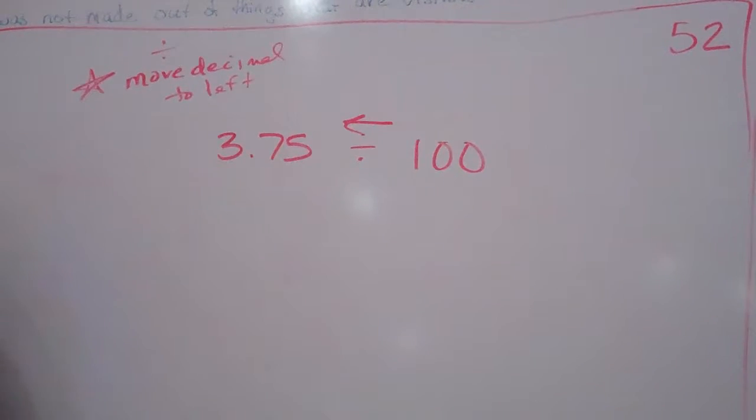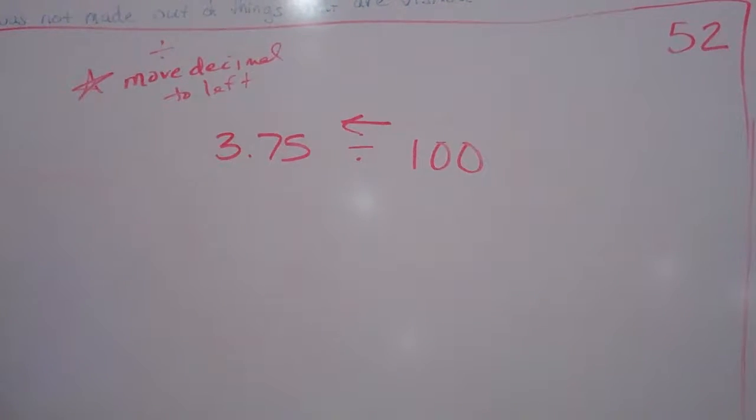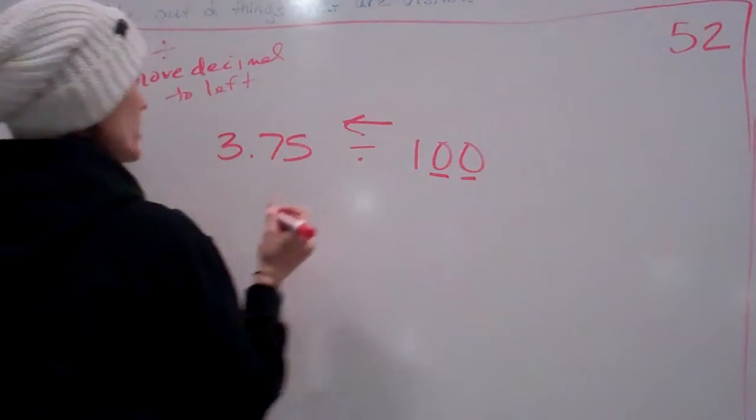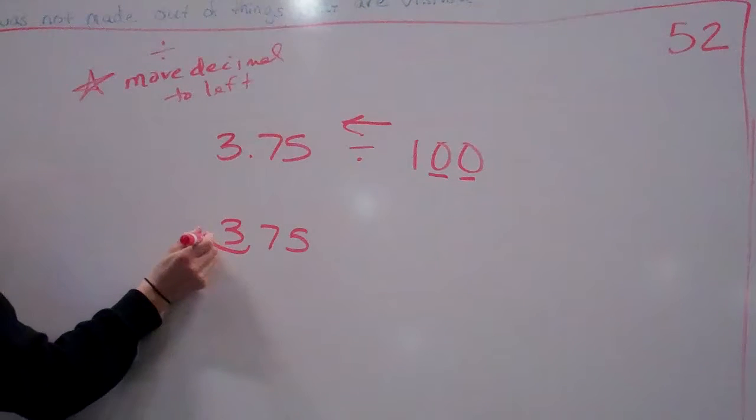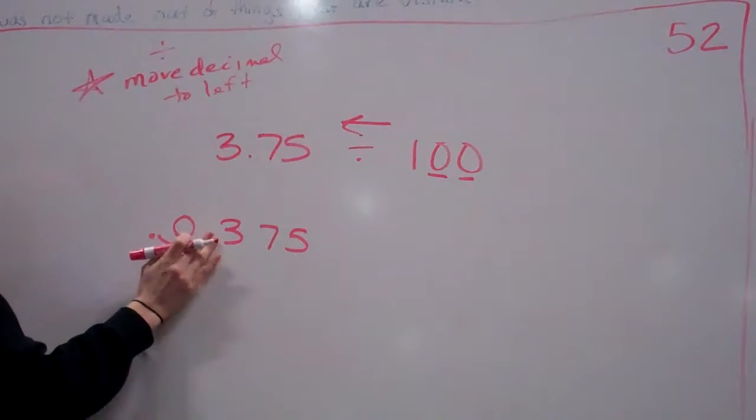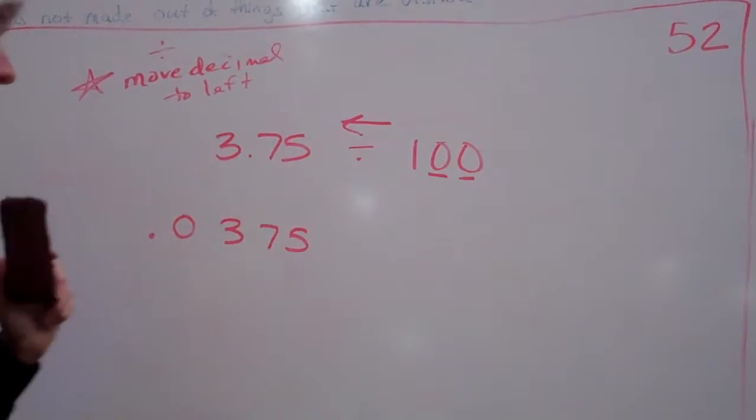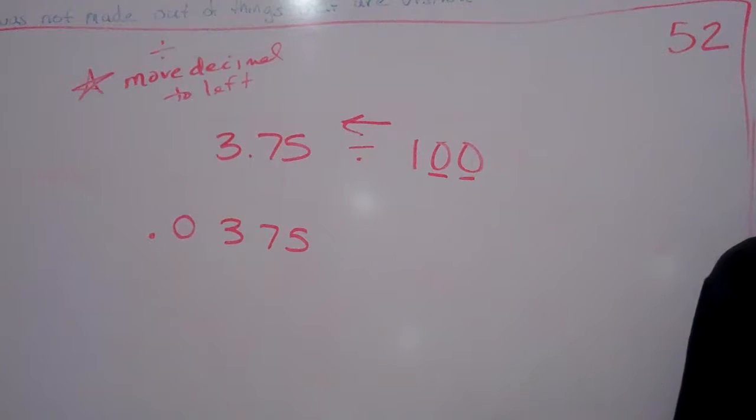So how many spaces would I move this one to the left? Two. Why two? Because there's two zeros. Very good. So 3.75 now becomes one, two steps to the left, fill it in with zero, and that would be my answer. Pretty simple, right?